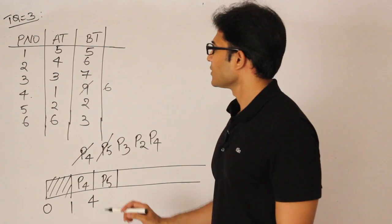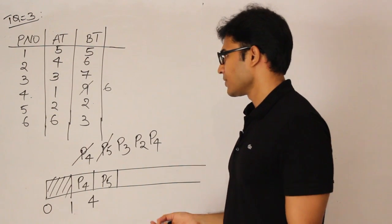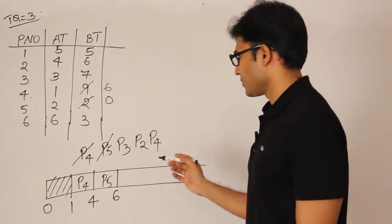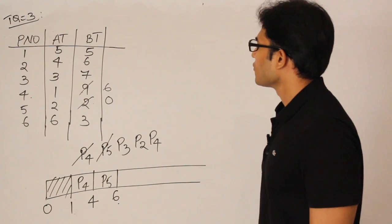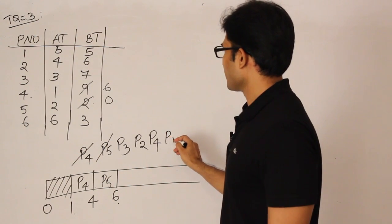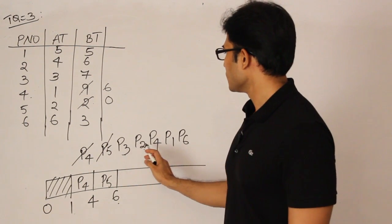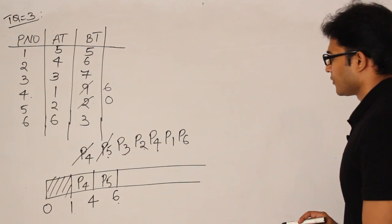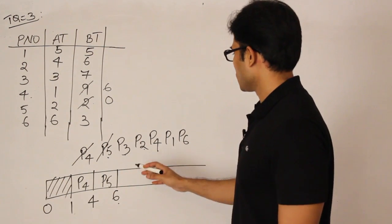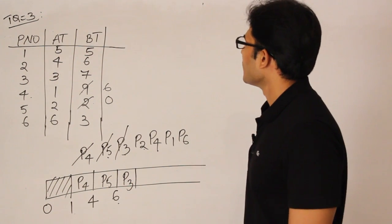The next process to schedule is P5. P5 needs only 2 units of time, so even though the time quantum is 3, we run it for just 2 units and it completes. The time is now 6. By time 6, P1 arrived at time 5 and P6 arrived at time 6, so all processes have now arrived. Since P5 completed, we don't add it back to the queue.